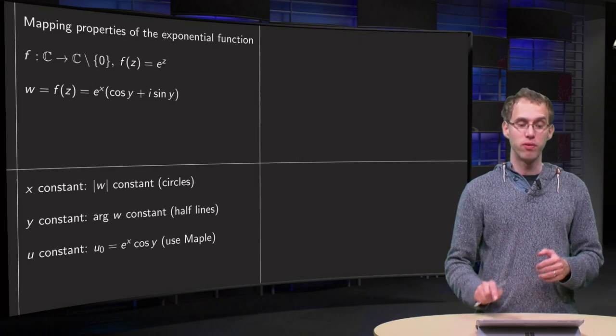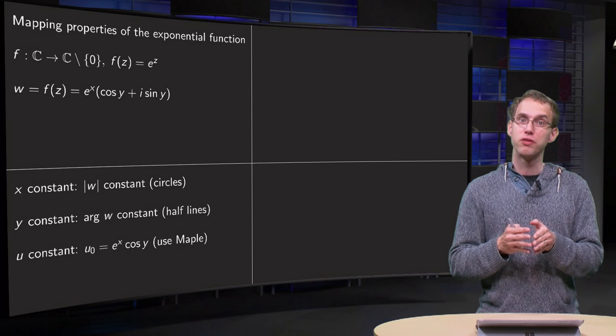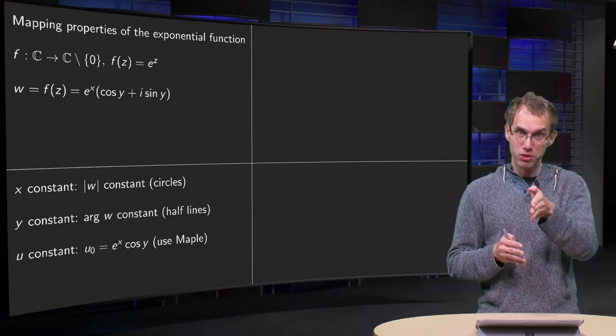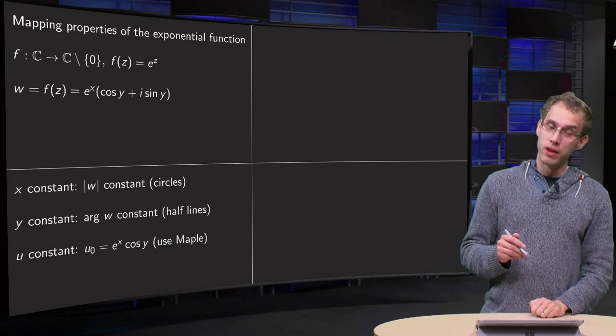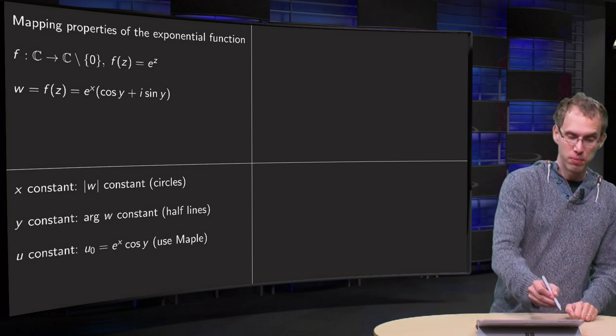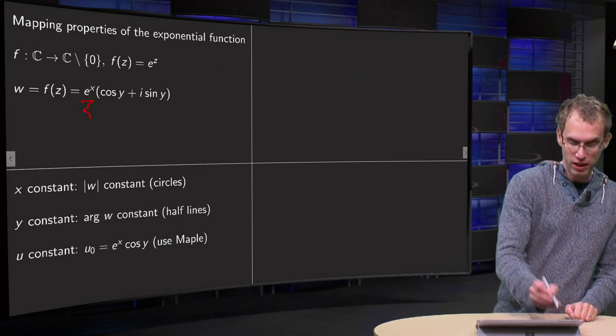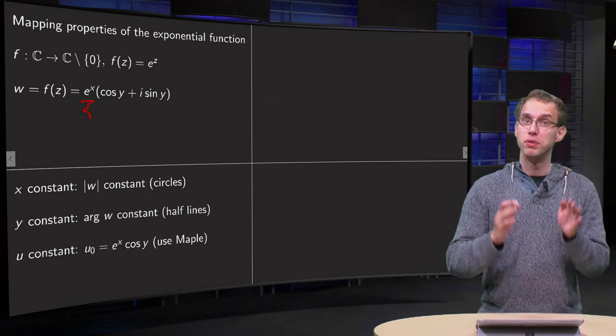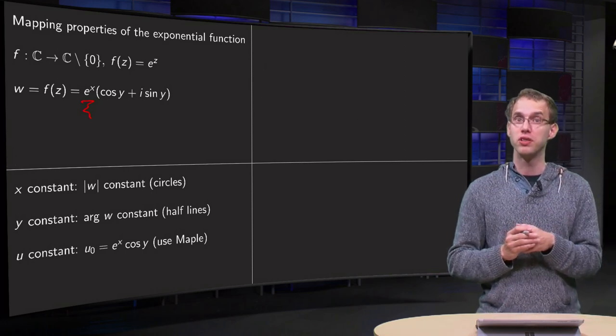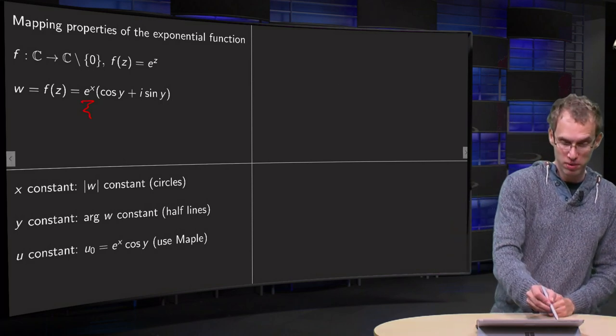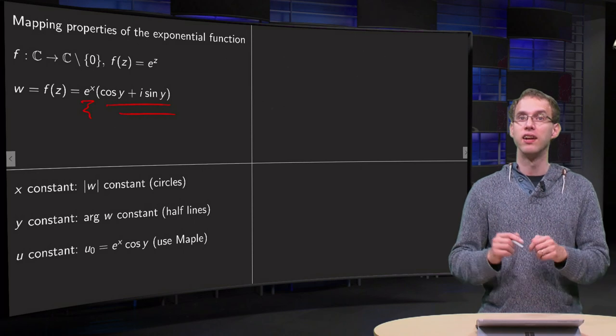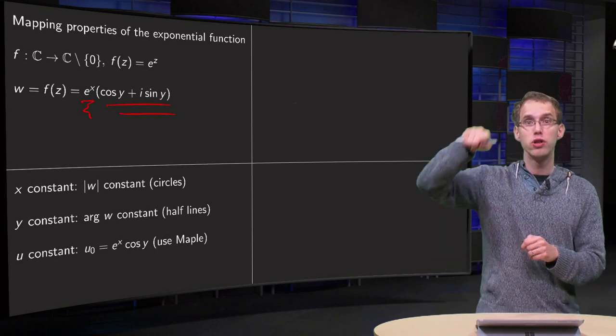Now we are going to look at what happens to curves in the x-y plane where x is constant. Well if we have x constant, that means that for w, e^x is constant, which means that the norm of w is constant. And if the norm of w is constant and the argument can take anything, we are going through a circle.